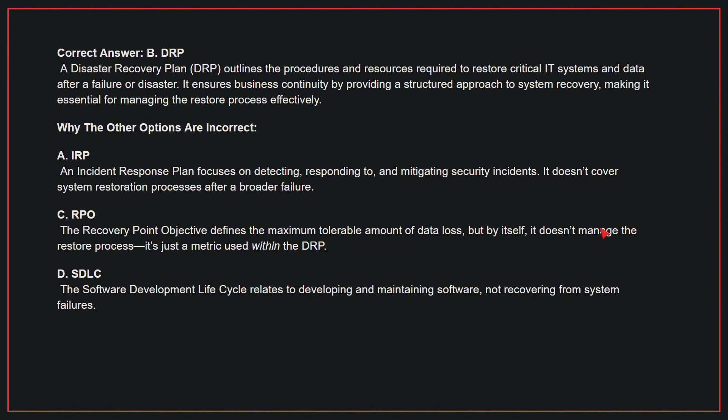Why the other options are incorrect: A. IRP — an IRP focuses on detecting, responding to, and mitigating security incidents. It doesn't cover system restoration processes after a broader failure. C. RPO — the RPO defines the maximum tolerable amount of data loss, but by itself it doesn't manage the restore process; it's just a metric used within the DRP. D. SDLC — the software development lifecycle relates to developing and maintaining software, not recovering from system failures.